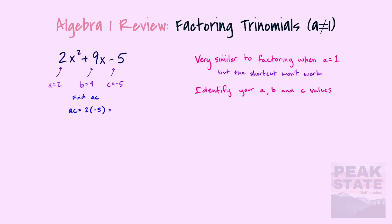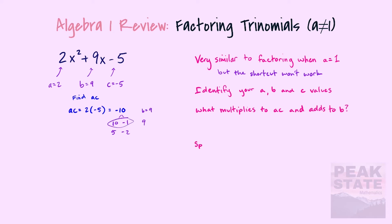We're going to find our AC value: two times negative five gives us negative ten. We need factors that multiply to negative ten but add to our b value of nine. I like to build factor trees — we look at positive ten and negative one, and five and negative two. Clearly we want ten and negative one because it adds to nine.